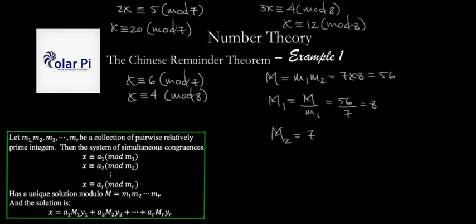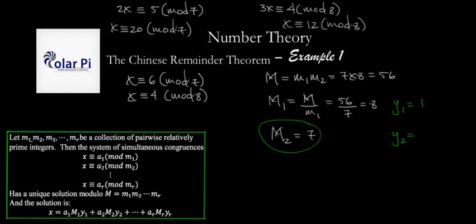Now we need y_1 and y_2. y_1 is the inverse of capital M sub 1 (which is 8) mod 7. Since 1 × 8 = 8 ≡ 1 mod 7, y_1 = 1. y_2 is the inverse of capital M sub 2 (which is 7) mod 8. Since 7 × 7 = 49, and 49 divided by 8 leaves remainder 1, y_2 = 7.